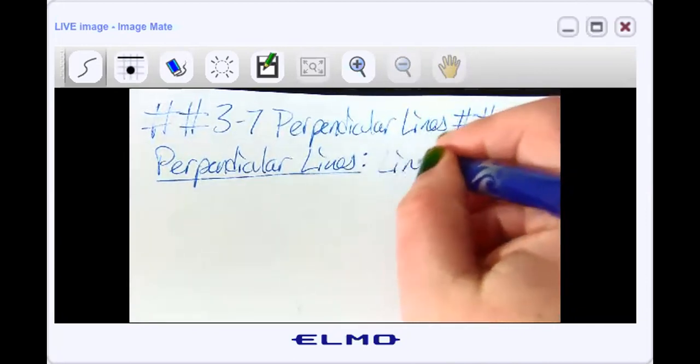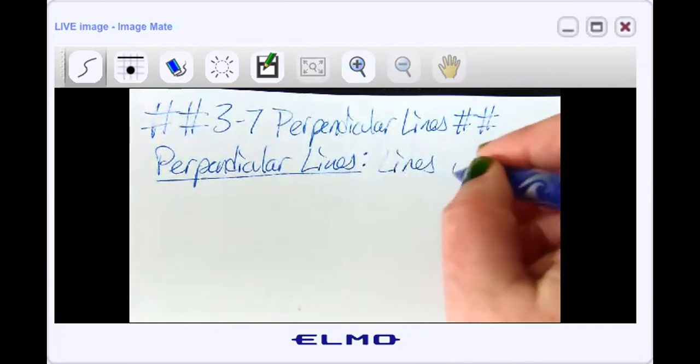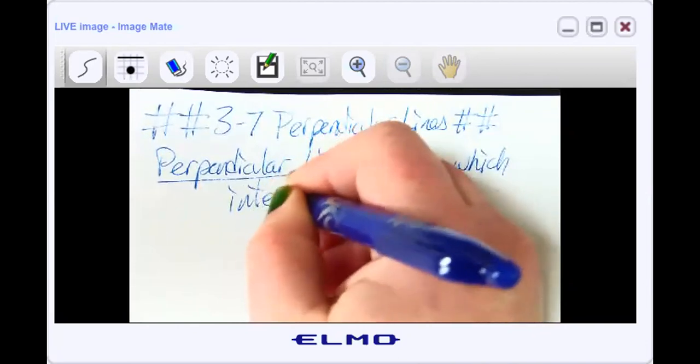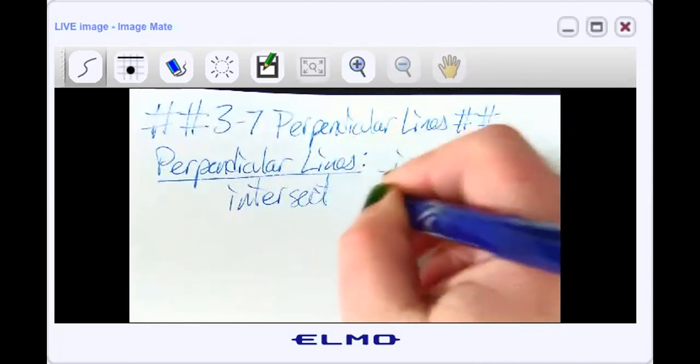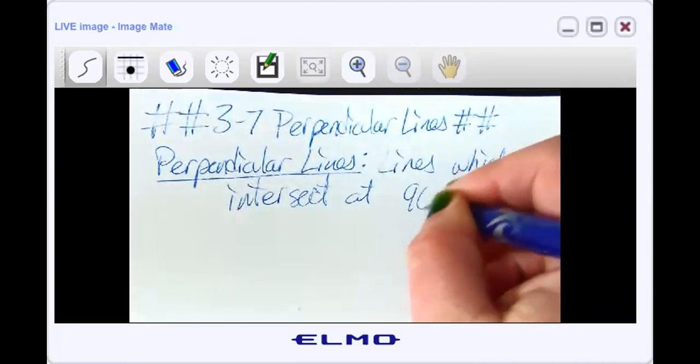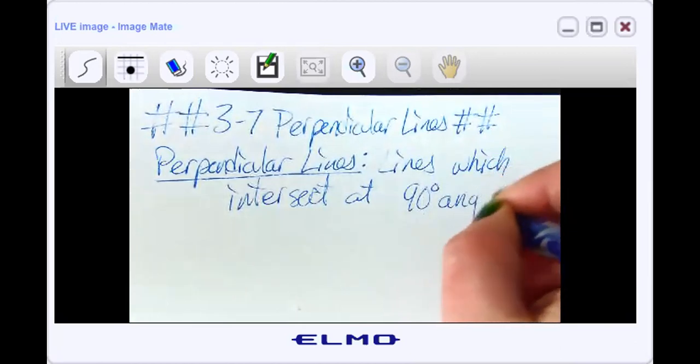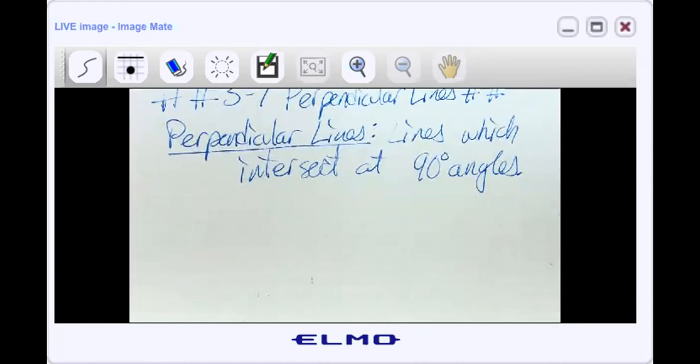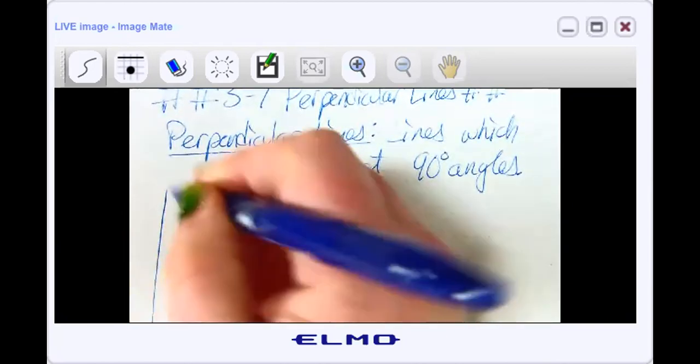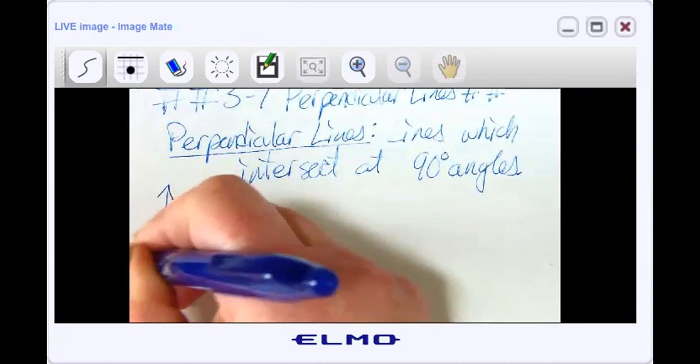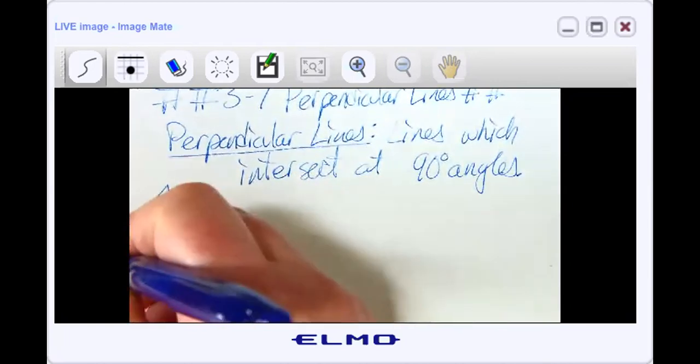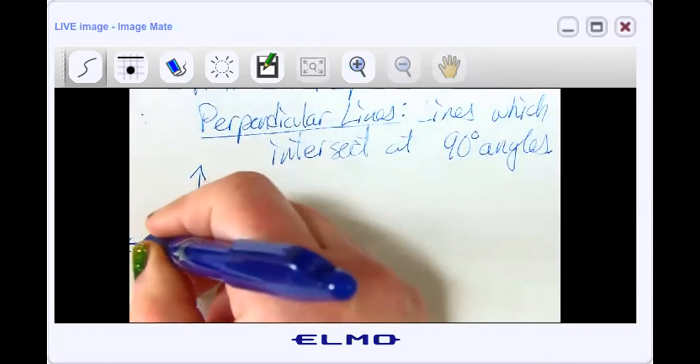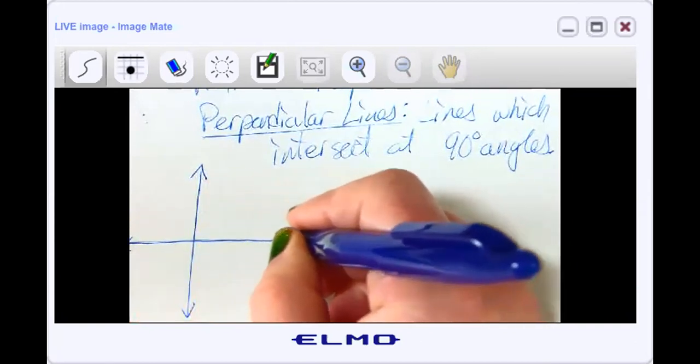So lines, let's go ahead and define them. Lines which intersect at 90 degree angles. So this is like the X and Y axis of the coordinate plane, they're always perpendicular to each other.